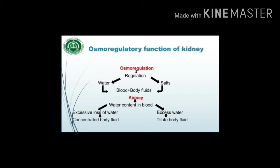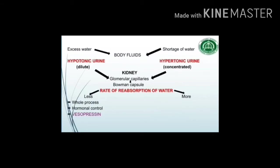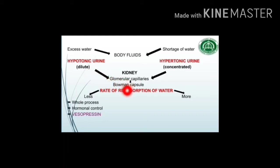The kidney concentrates body fluids in case of excessive loss of water, and dilutes body fluids in case of excess water. The kidney produces hypotonic urine — that is, dilute urine — in case of excess water, by filtering more water from glomerular capillaries into the Bowman's capsule and reabsorbing less water.